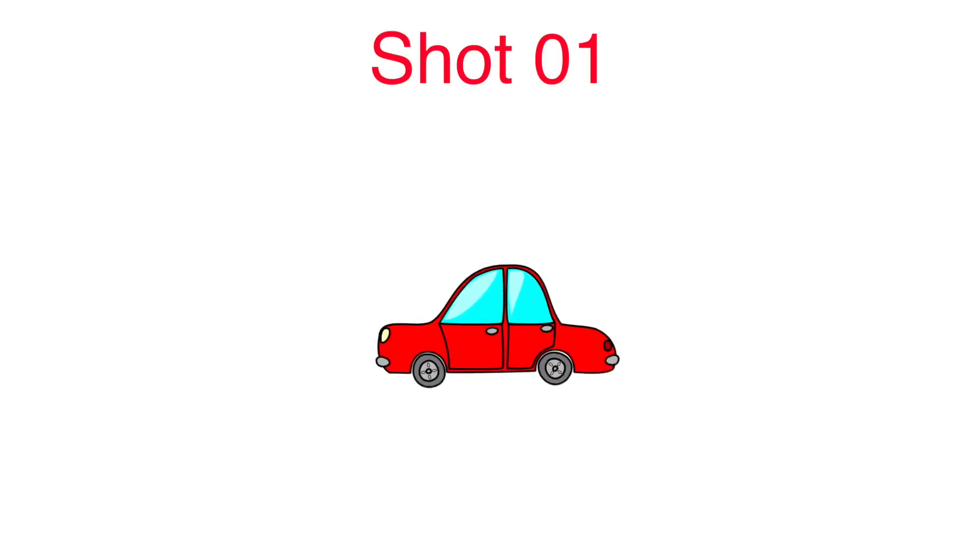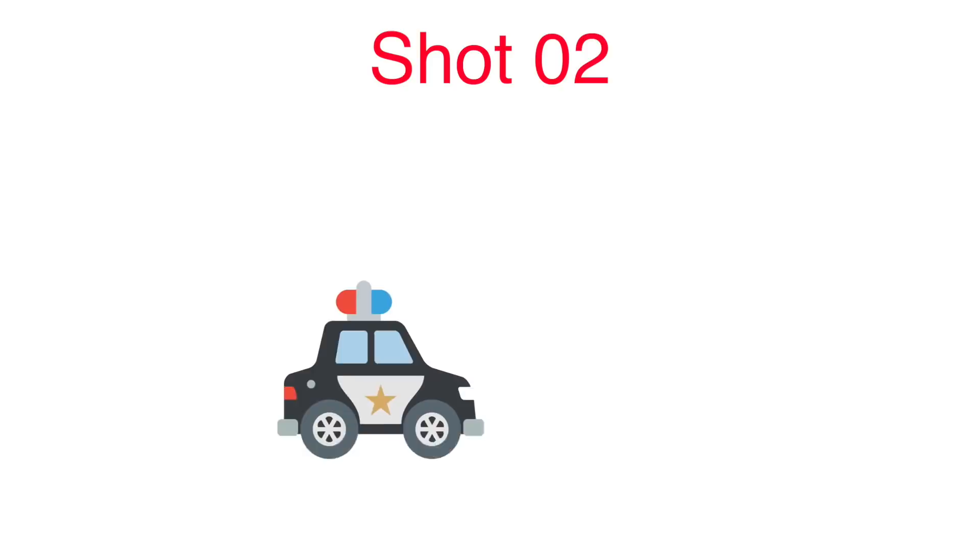इसका मतलब यह हुआ कि चोर भाग रहा है और उसके पीछे पुलिस है। लेकिन अगर second shot में पुलिस की गाड़ी right से left की तरफ आ रही हो, तो इसका मतलब यह हुआ कि चोर तो भाग रहा है लेकिन उसके सामने से पुलिस आ रही है। यह फर्क समझना बहुत ज़रूरी है।